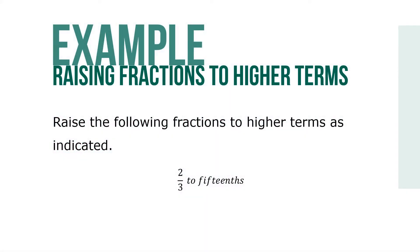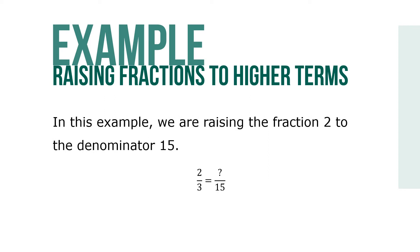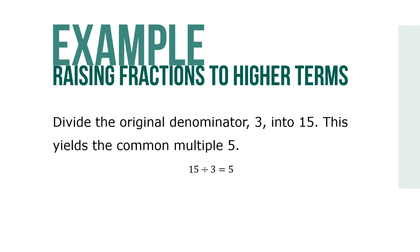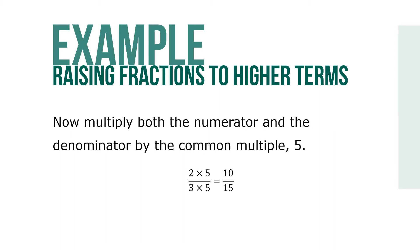Here's an example: raise the following fraction to higher terms as indicated — two-thirds to fifteenths. We're raising the fraction 2/3 to the denominator 15. Divide the original denominator, 3, into 15. This yields the common multiple, 5. Now multiply both the numerator and the denominator by 5: 2 times 5 is 10, and 3 times 5 is 15, giving us 10 over 15.